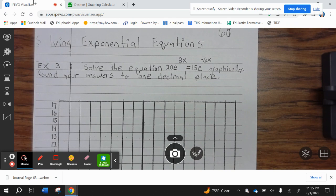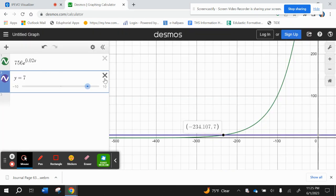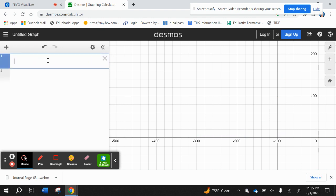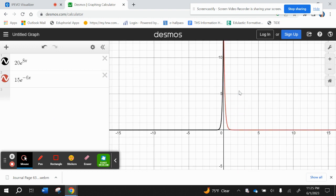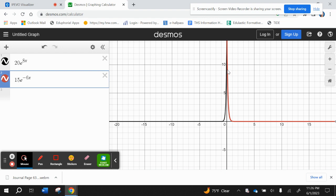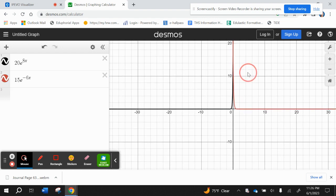Here we have two exponentials. So 20e to the 8x. We want to press the home screen. And then we have 15e to the negative 6x. I'm going to zoom out. Click on the line. If they intersect, the intersection will pop up.